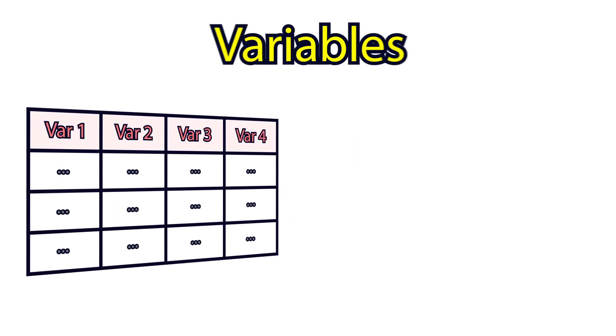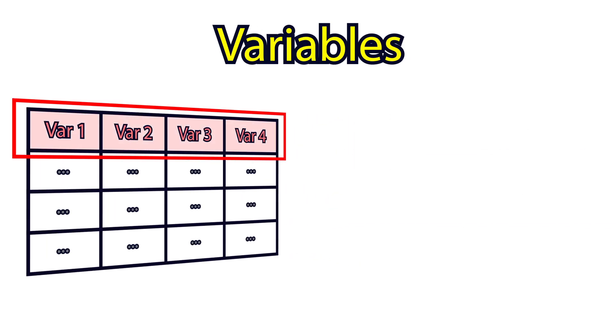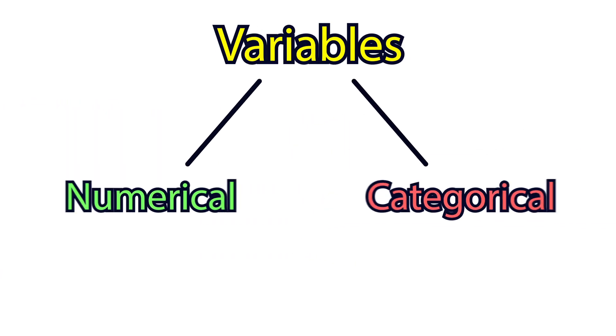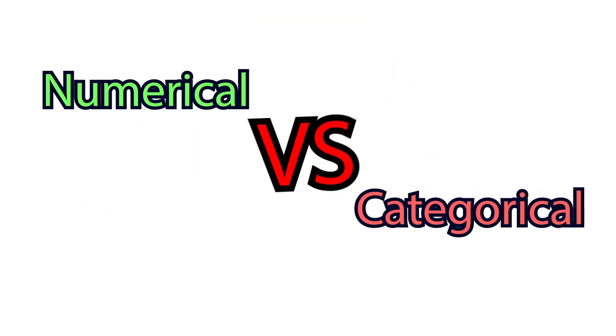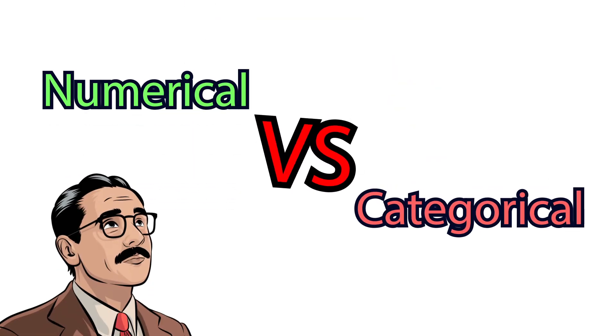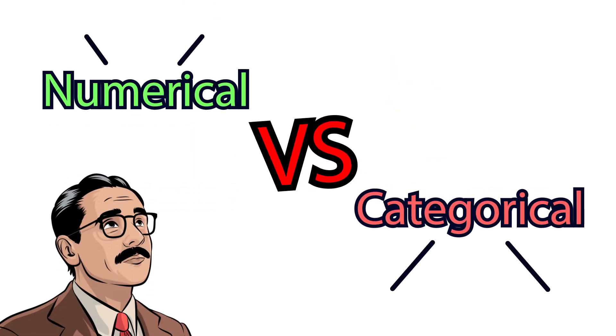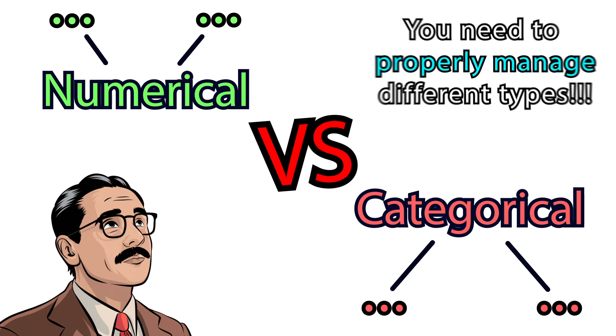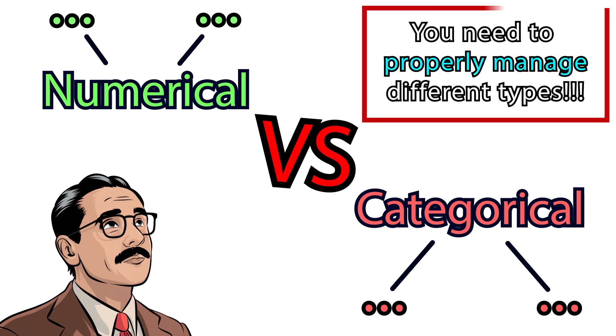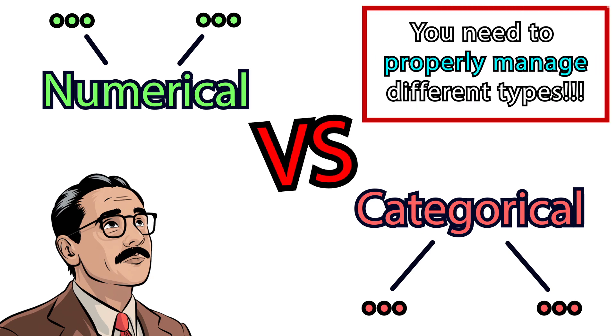Hi. Variables in tabular data can be classified into numerical and categorical types. Be careful to understand the differences between them and their specific types, as they play a significant role in model creation.